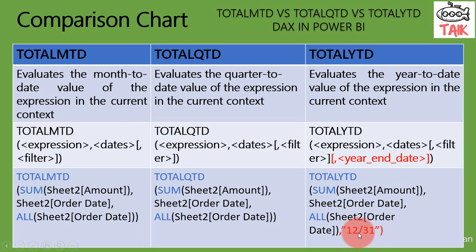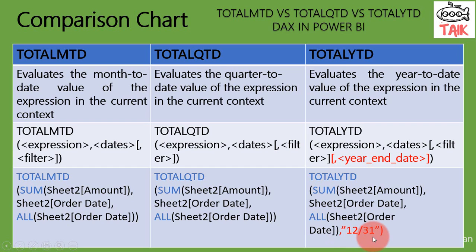If you mention the year-end date as '6/30' — that is June 30th — then it will calculate the Total YTD from the 1st of July to the end of June 30th each and every year. If you leave it blank without mentioning '12/31' or '6/30', then the system will consider December 31st as the default year end.